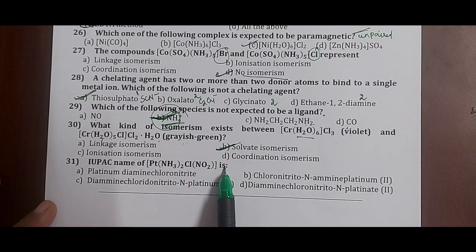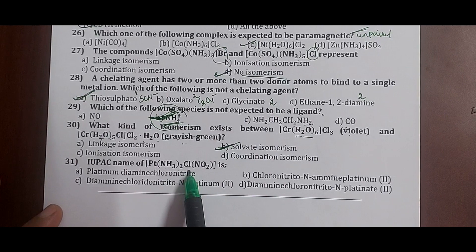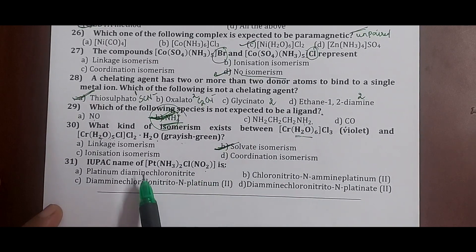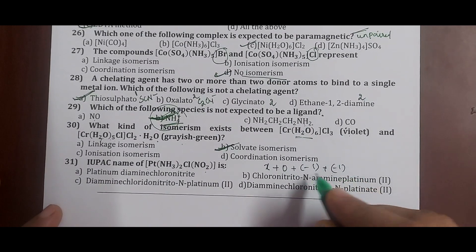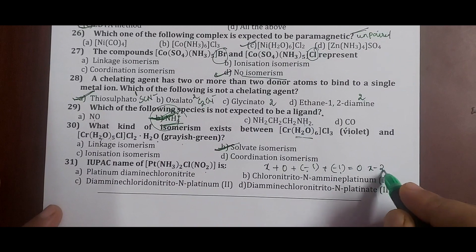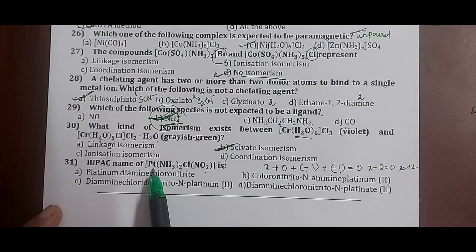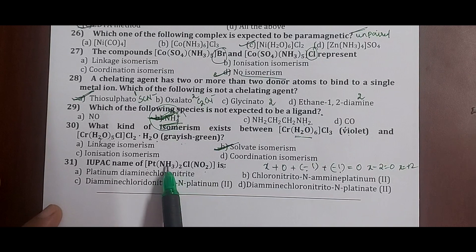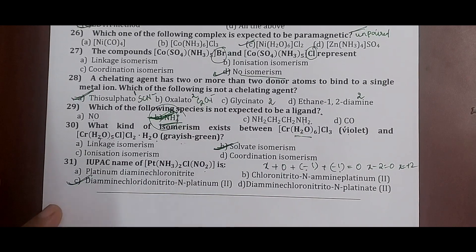Question 31: the IUPAC name of [Pt(NH3)2Cl(NO2)]. We write ligands first: two NH3 give 'diammine'; one Cl gives 'chlorido'; NO2 gives 'nitrito-N'. Oxidation state: x + 0 + (−1) + (−1) = 0, so x = +2. The complex is neutral, so platinum name stays. The IUPAC name is diamminechloridodinitrito-N-platinum(II). Correct answer: option C.